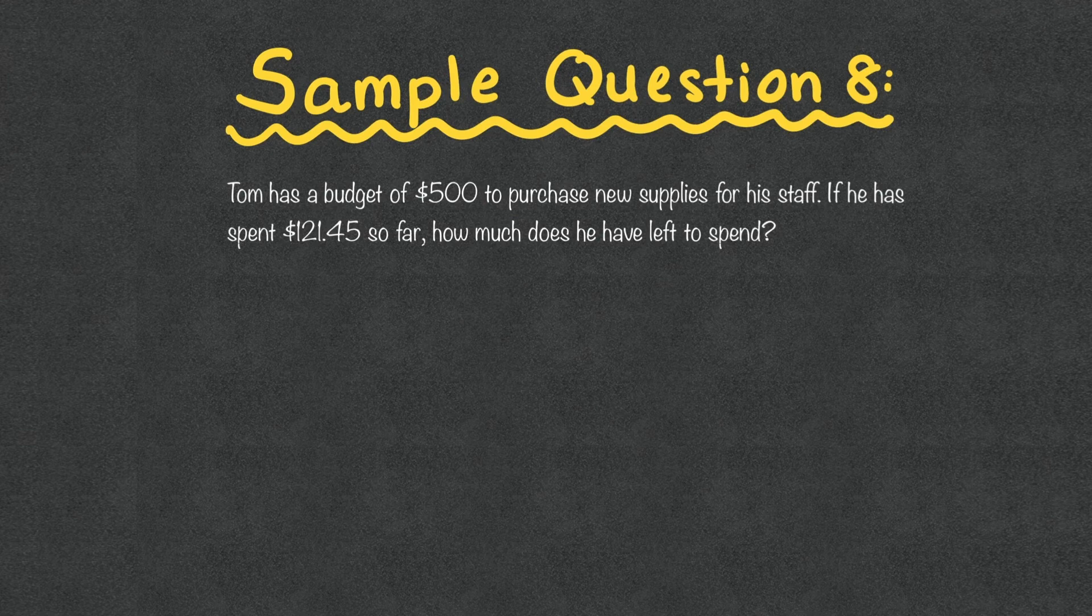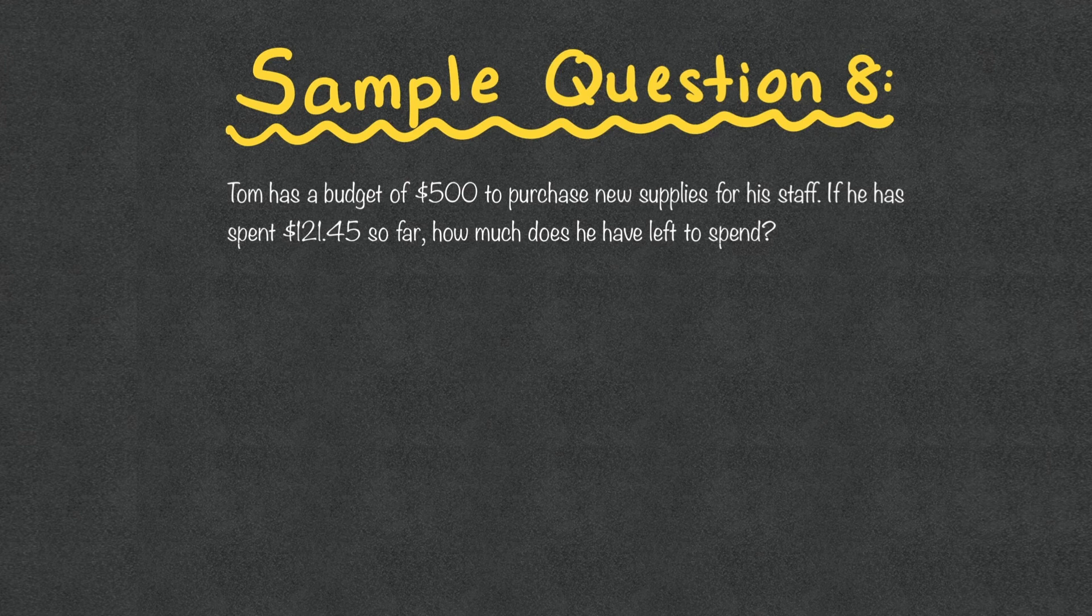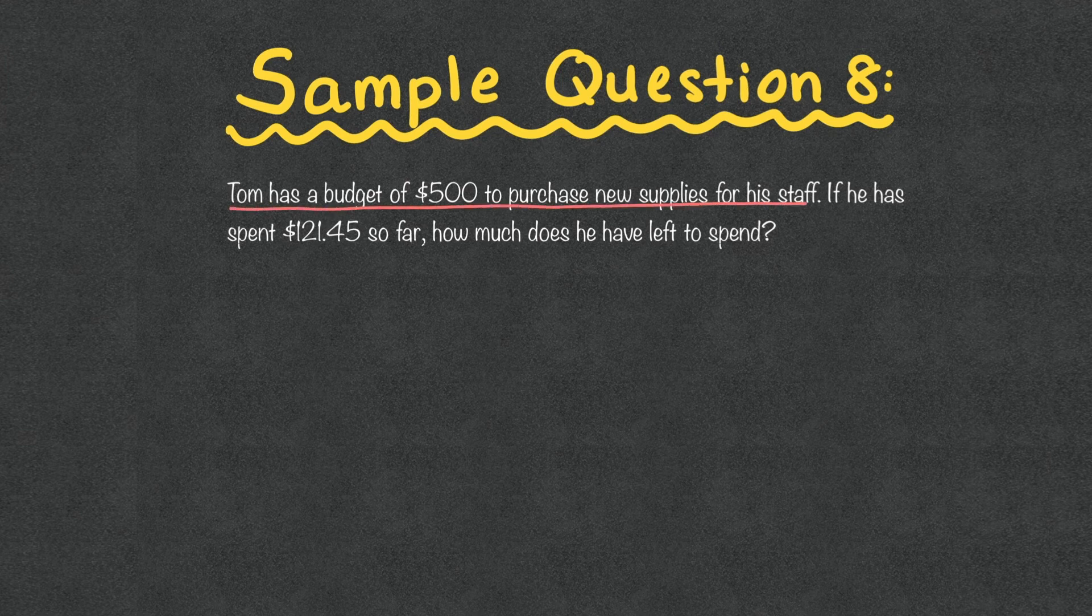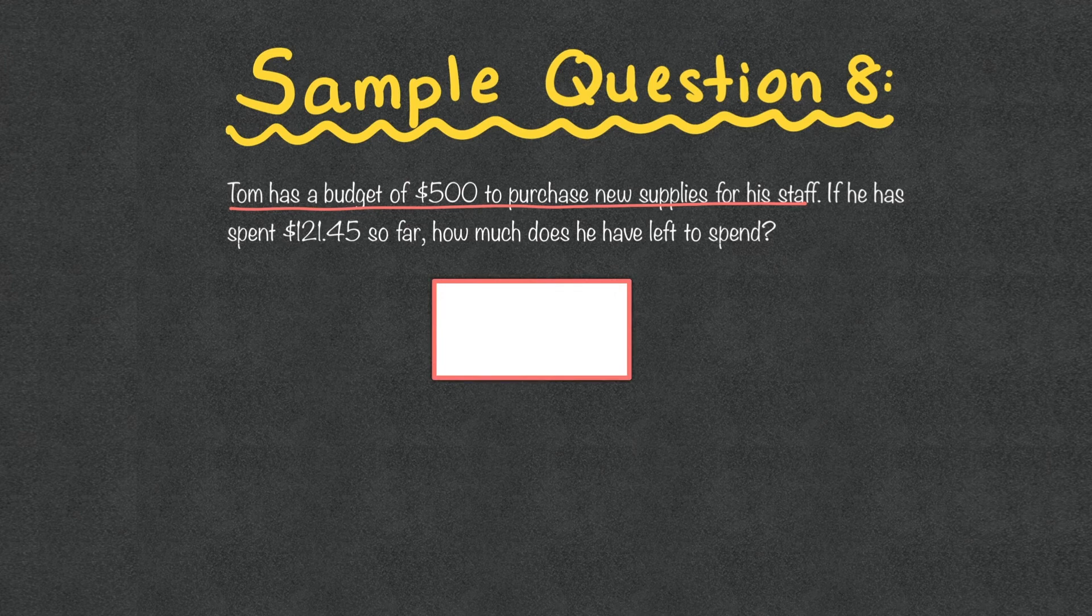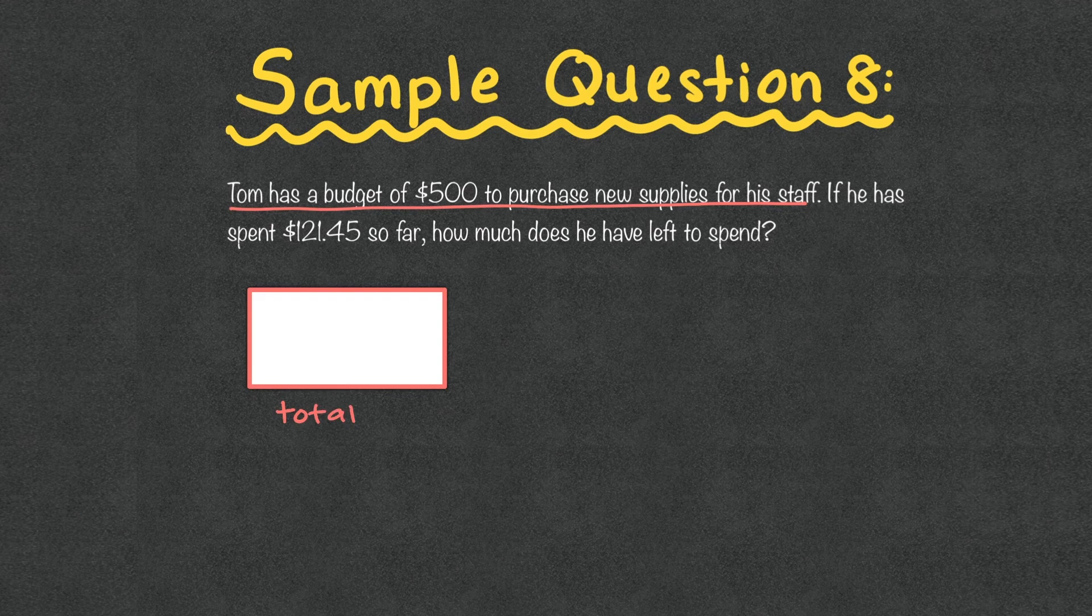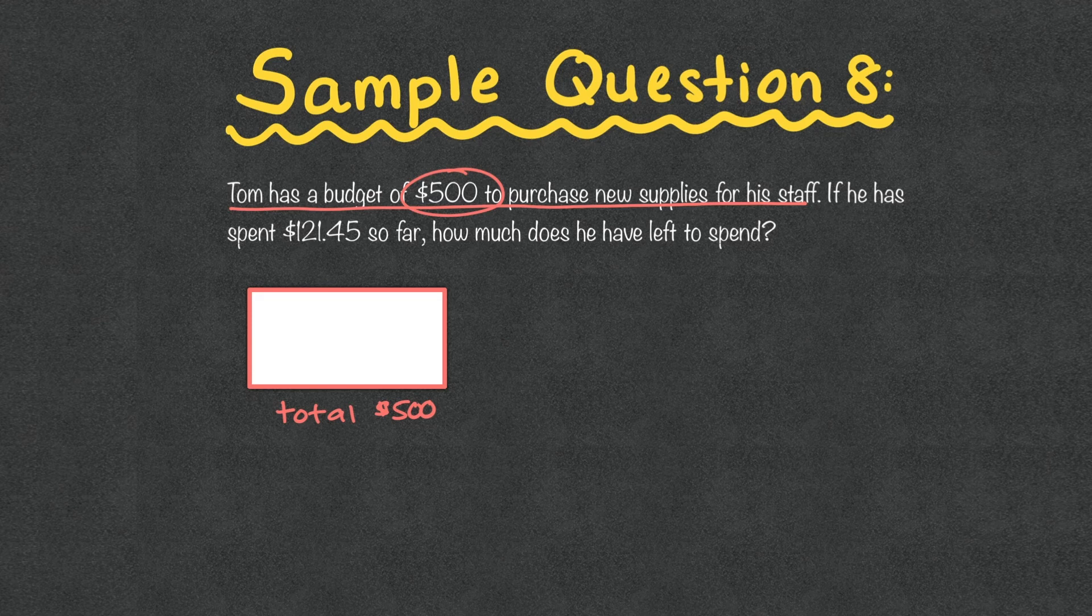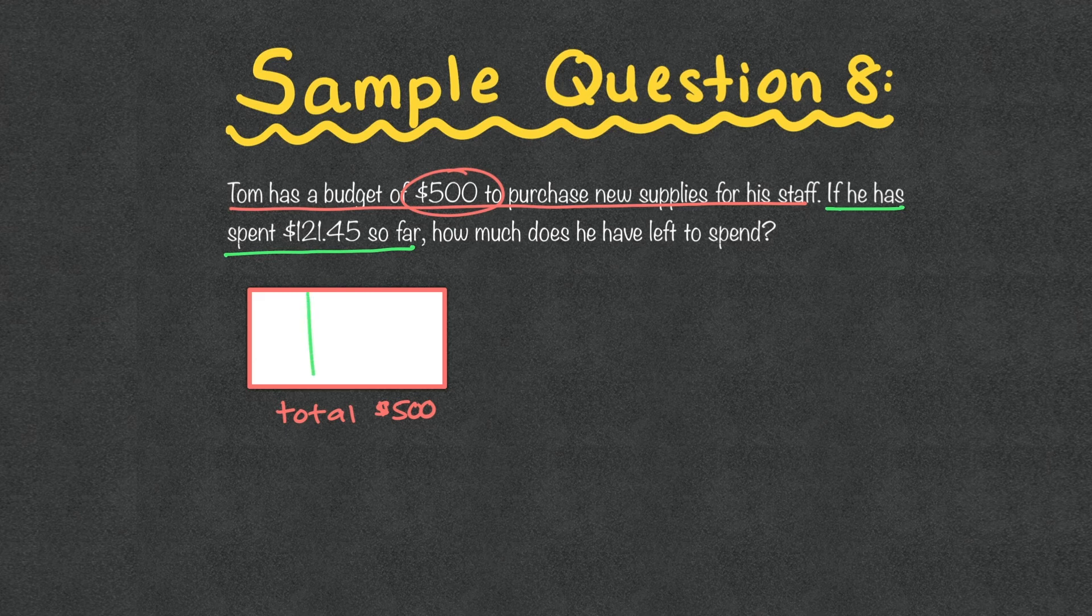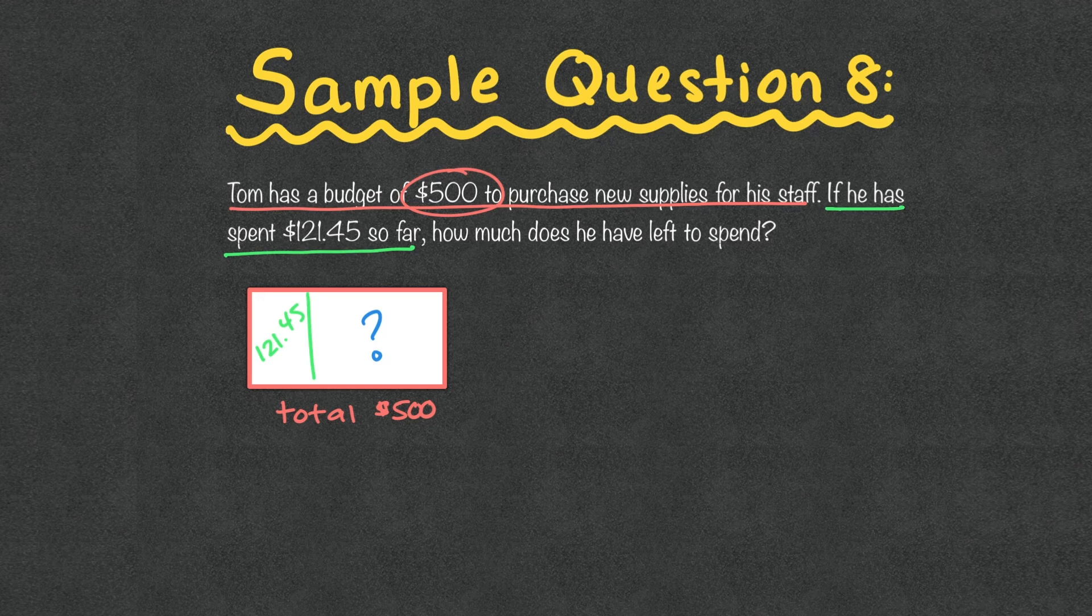And our final sample question. Tom has a budget of $500 to purchase new supplies for his staff. If he has spent $121.45 so far, how much does he have left to spend? So let's see. Let's take our first sentence. Tom has a budget of $500 to purchase new supplies for his staff. One of the important things to note is that when we do this, we do know that the $500 is going to be the total amount. This is the total and we know it's $500. And we know with the budget, you're not going to get more than that. So that must be the amount in total that's there. So we also can see that if he has spent $121.45 so far, we know that amount came out of the $500.